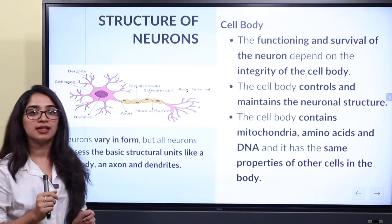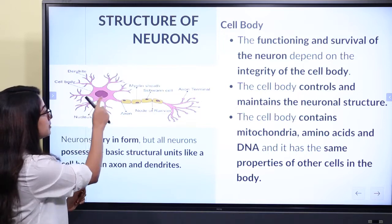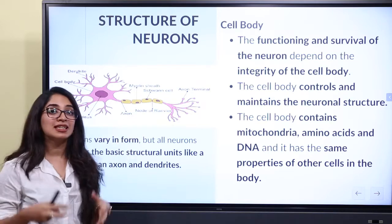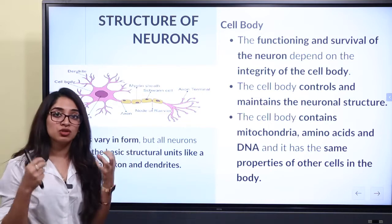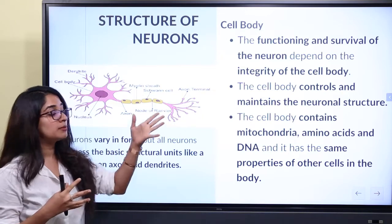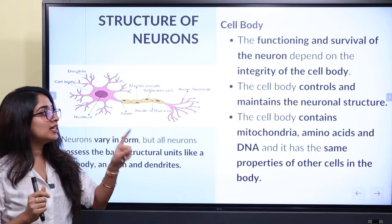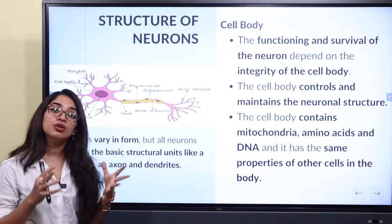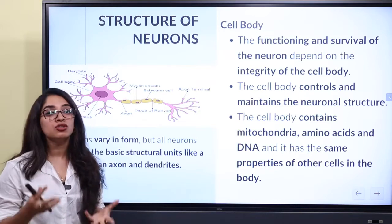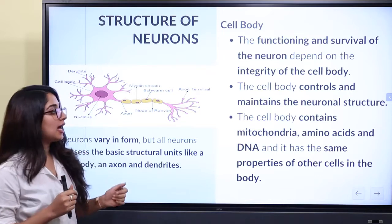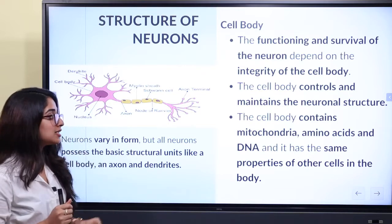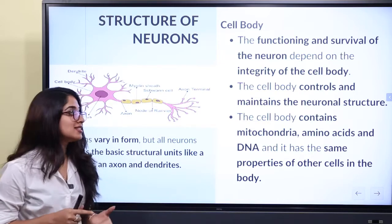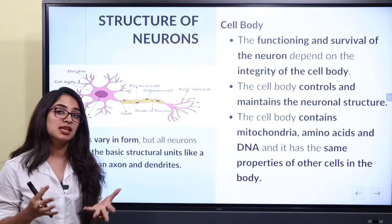What is the cell body? The functioning and survival of the neuron depends on the cell body. It controls and maintains neuronal structure. The cell body contains mitochondria, amino acids, and DNA. It has the same properties as other cells in the body.